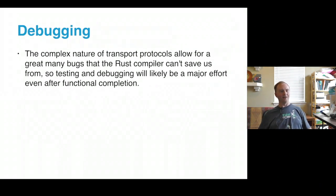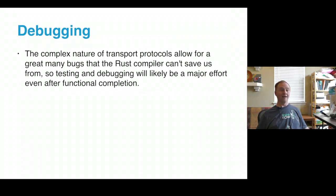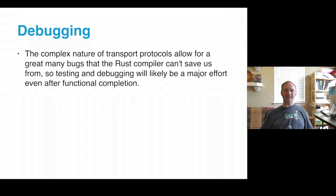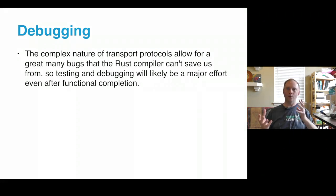Debugging: like I said, there's a lot of things that Rust is simply not going to save us from. SCTP is a complex protocol; there's a lot of things to get wrong that Rust will happily still compile. Even after getting something that works, there's going to be an awful lot of testing and developing test suites and finding all the ways it's not working quite right — including looking for deadlock scenarios between the SCTP stacks.